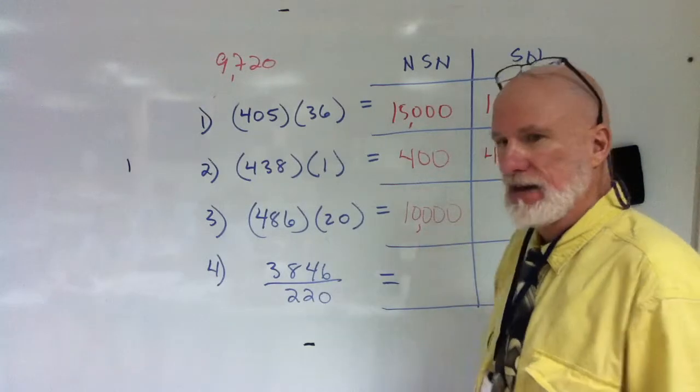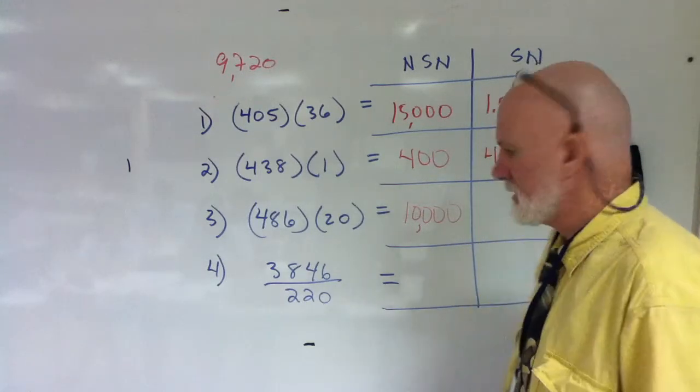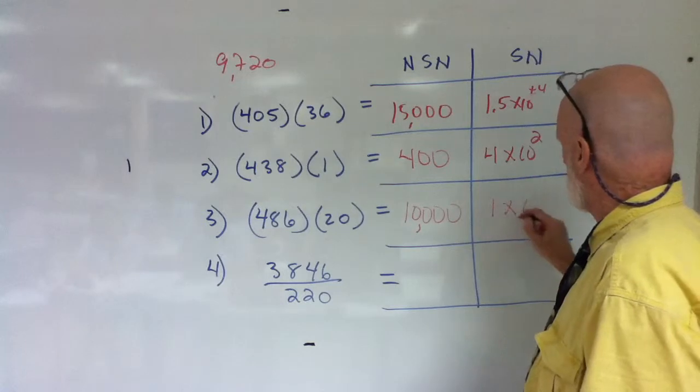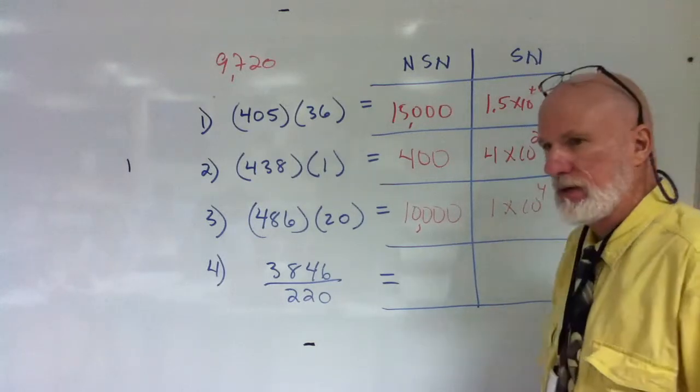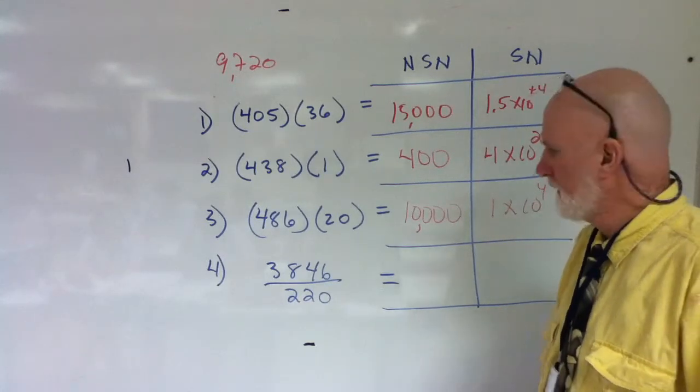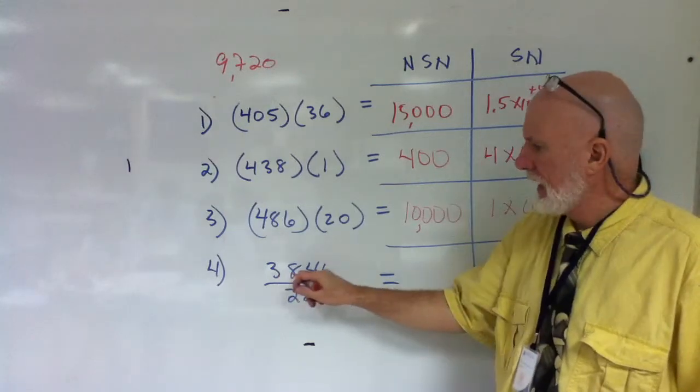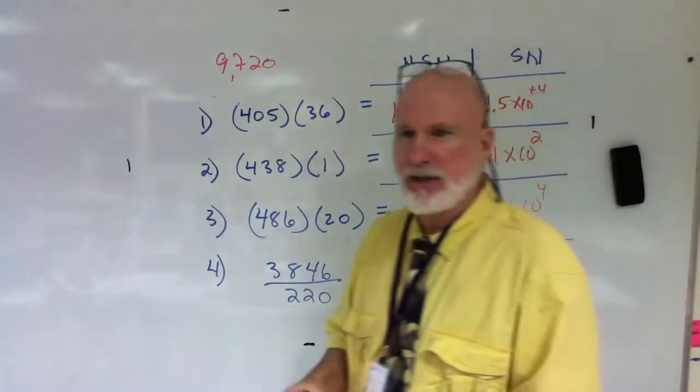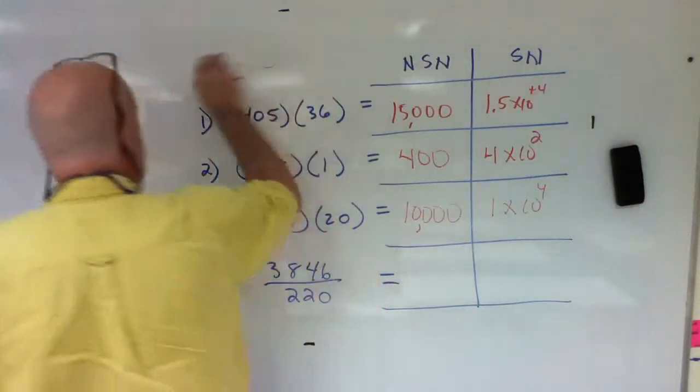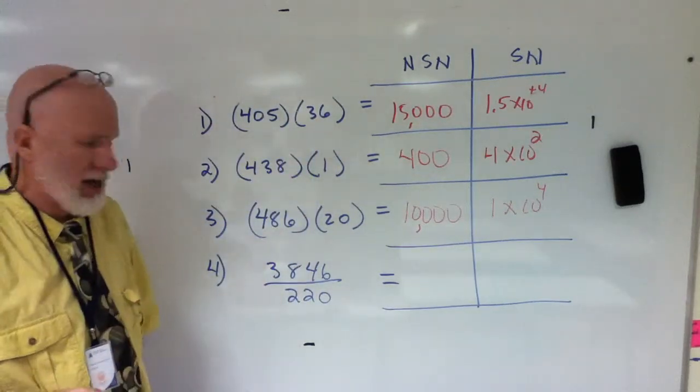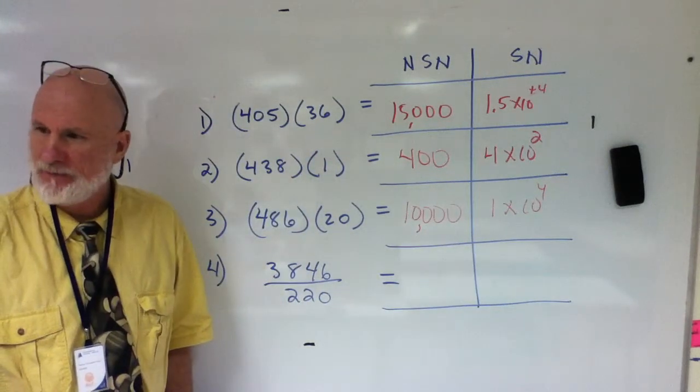Written like that, correct? Or 1 times 10 to the fourth. Clear? All right. And then 3,846 divided by 220.